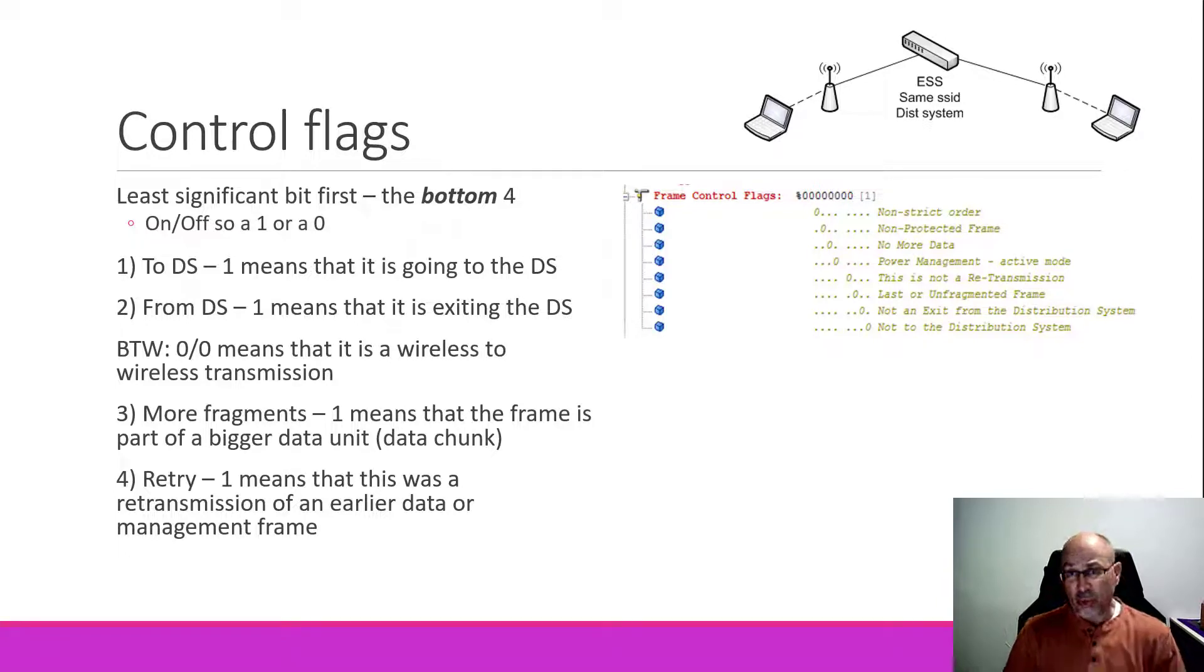Remember that access point. One of the jobs that the access point has to do is manage the traffic within the cell, and that includes communication to and from the wired network. These first two flags, to or from the distribution system, indicate which way a frame happens to be flowing. If it's going to the distribution system, or from the wireless to the wired, we're going to set the 2DS flag to 1. If it's coming from the distribution system, meaning the other way, it's coming from wired to wireless, then we're going to set the from distribution system flag to a 1. Anytime these two flags are set to 0 and 0, it just means the two wireless nodes are communicating, and that can be any kind of wireless node.